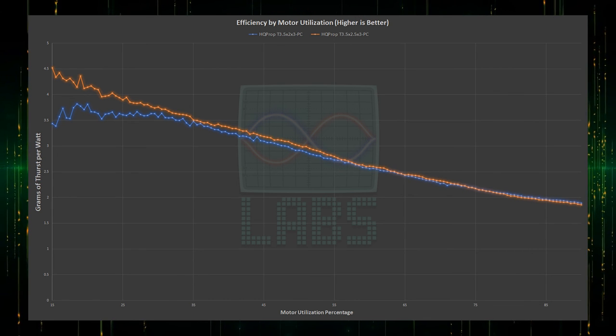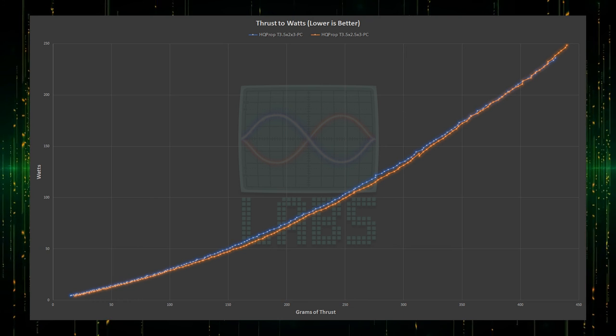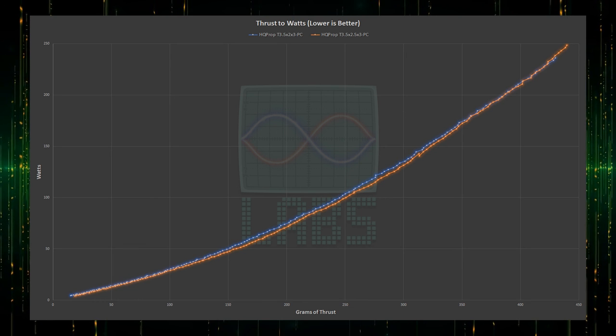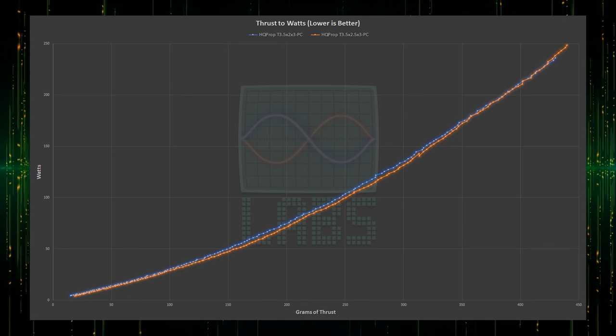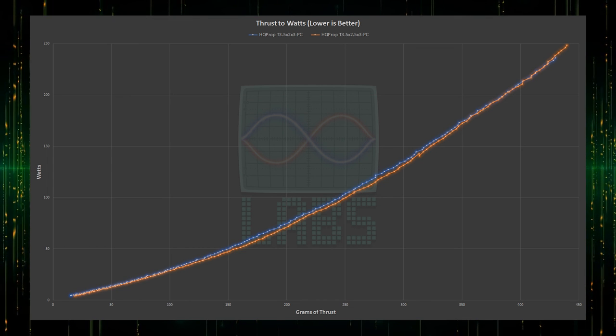Now for the ultimate view. Grams of thrust to watts of power. Where on the graph you want to be lower for less current, and to the right for more thrust. The 2.5-inch pitch prop takes less power for almost every gram of thrust generated. It generates 10 grams of additional thrust per motor at the top end, requiring additional power.